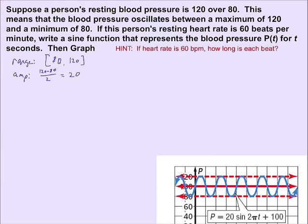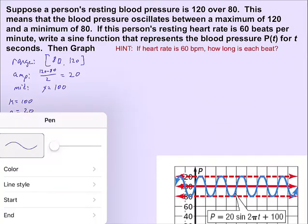That's our amplitude. And if the maximum of the range is 120 and the amplitude is 20, that means the midline must be y equals 100. So what we've just figured out is that the k must equal 100 and the a must equal 20, which are two of the three parts of our sine equation.